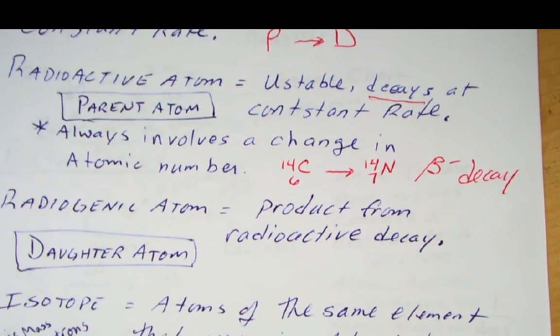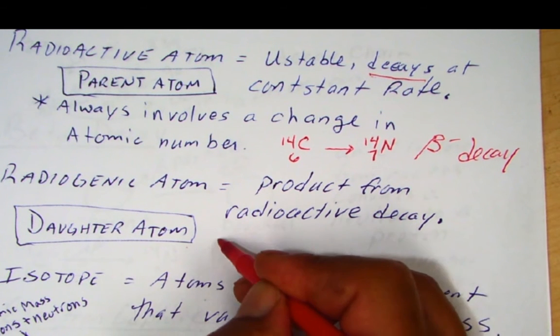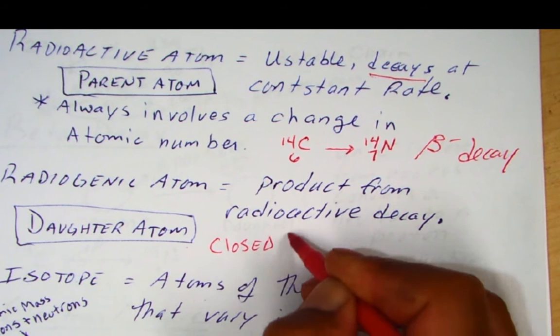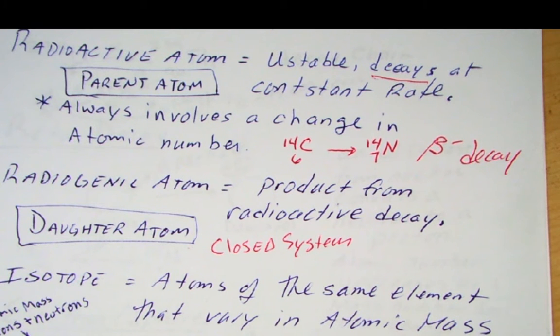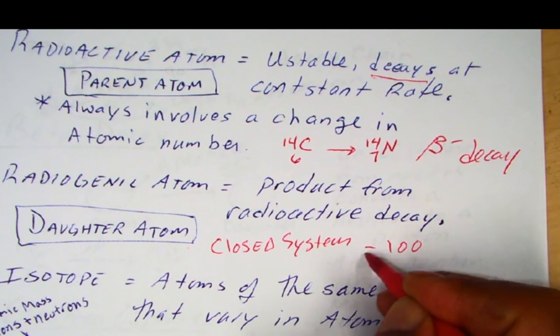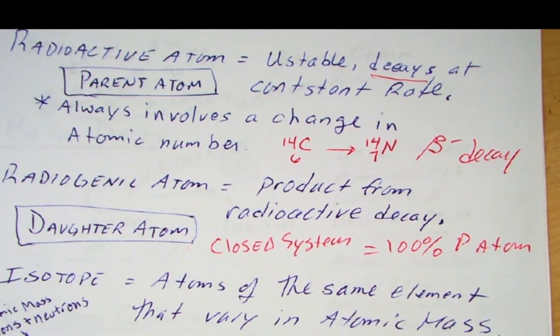Now, a radiogenic atom, the daughter atom, is said to be produced by this radioactive decay. So we'll talk about in a closed system. At the beginning, when this atomic clock begins to tick, or we're going to start counting time, we're going to start off with 100% parent atoms. Over time, we're going to grow those radiogenic atoms. So you need time for the growth of a daughter atom.